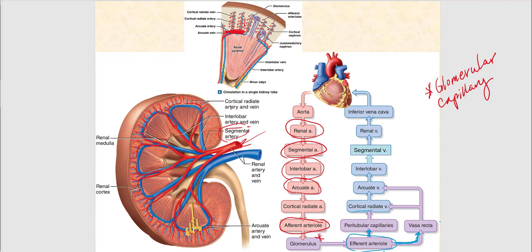From the peritubular capillary, blood converges into the cortical radiate vein, which runs alongside the cortical radiate artery. Then blood flows into the arcuate vein, which arches over the base of the renal pyramid. Then it drains into the interlobar vein, found in the renal column alongside the interlobar artery, and then converges into the segmental vein in the renal sinus alongside the segmental artery, draining into the renal vein.